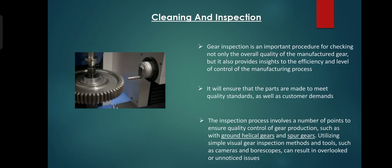After this, cleaning and inspection. Cleaning and inspection are the most important part in this process, because gear inspection is an important procedure for checking not only the overall quality of the manufacturer, but also provides insights into the efficiency and level of control of the manufacturing process. Cleaning involves the removal of sand, scale and excess metal from the casting. Scales are removed to improve the surface appearance. Excess metal in the form of fins, parting lines, and gates is removed. Inspection of casting for defects and general quality is performed.